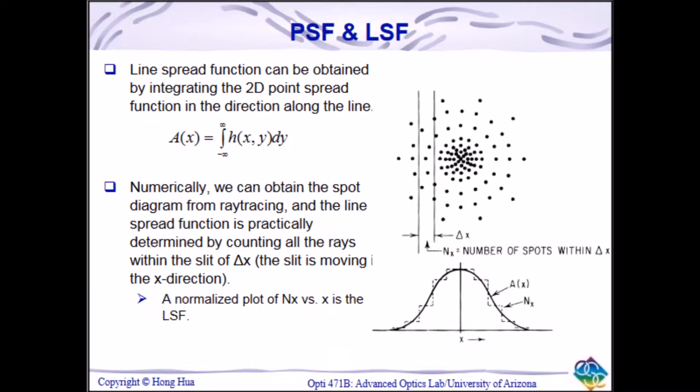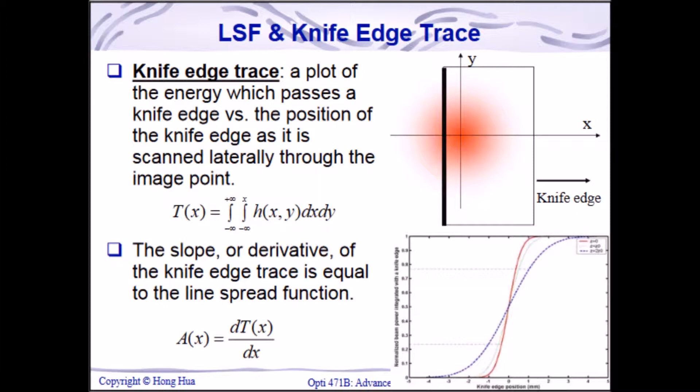The point spread function gives a map of image blur, assuming a point source as the object being imaged. The line spread function can be obtained by integrating a cross section of the point spread function. Experimentally, it can be obtained by finding the slope of a knife edge trace, which is a plot of normalized beam power against the position of a knife scanned across the image point.